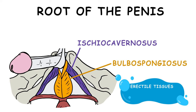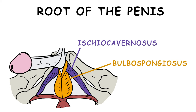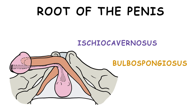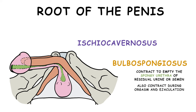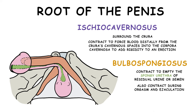Erectile tissues are tissues that engorge with blood during sexual arousal to create an erection. The two bulbospongiosus muscles are associated with the bulb of the penis and contract to empty the spongy urethra of residual urine or semen, and also contract during orgasm and ejaculation. The two ischiocavernosus muscles surround the crura and contract to force blood distally from the crura's cavernous spaces into the corpora cavernosa to add rigidity to an erection.